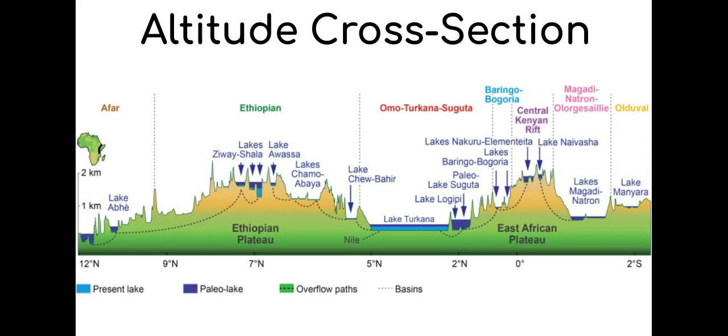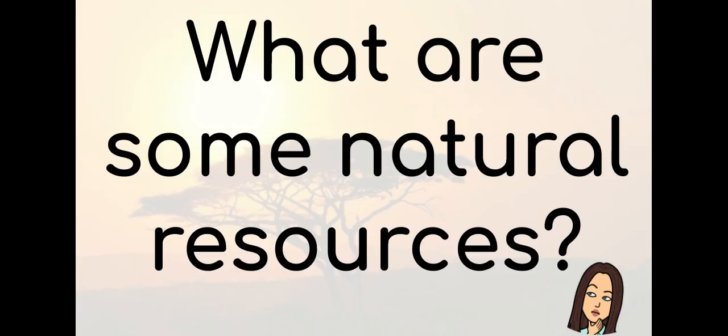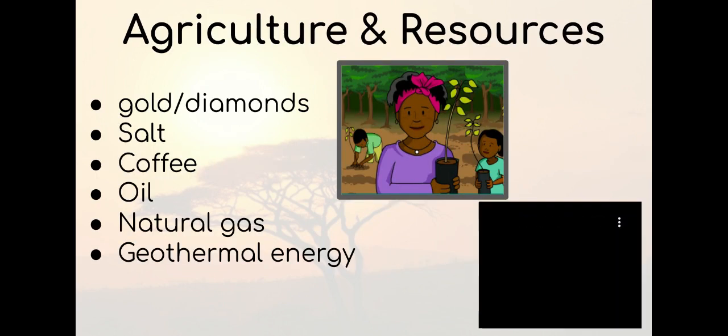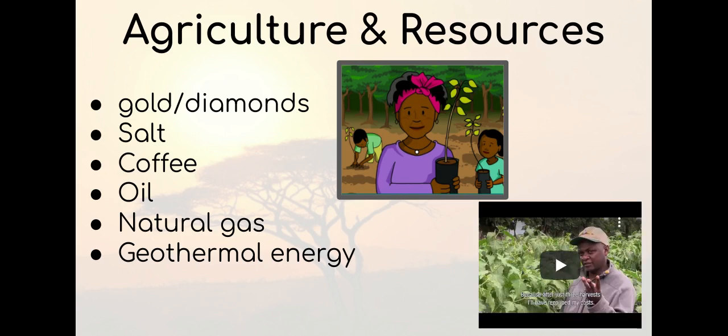Notice that there is also water collected in the mountains, as there are some lakes in the higher elevations. Eastern Africa is known for its gold and diamonds in the ground. Salt is a big commodity, as it was once used as currency. There is also coffee, oil, and natural gas.